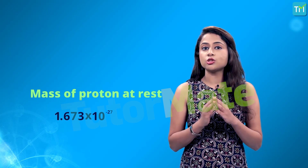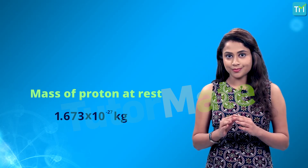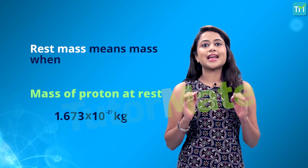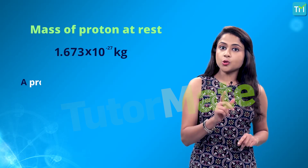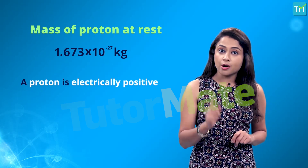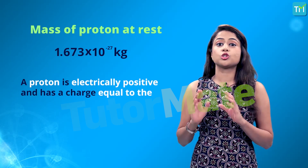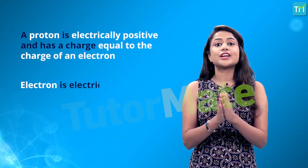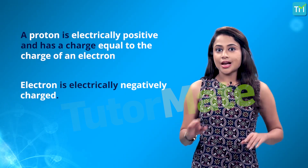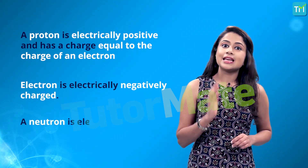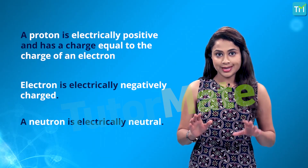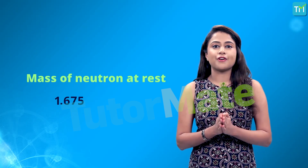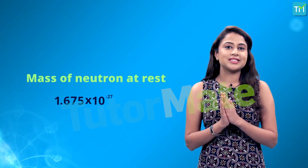A proton has a rest mass of approximately 1.673 × 10⁻²⁷ kg. The term 'rest mass' means the mass when an atom is at rest. A proton is electrically positive and has a charge equal to that of an electron, whereas an electron is electrically negatively charged. A neutron is electrically neutral and has a rest mass of approximately 1.675 × 10⁻²⁷ kg.